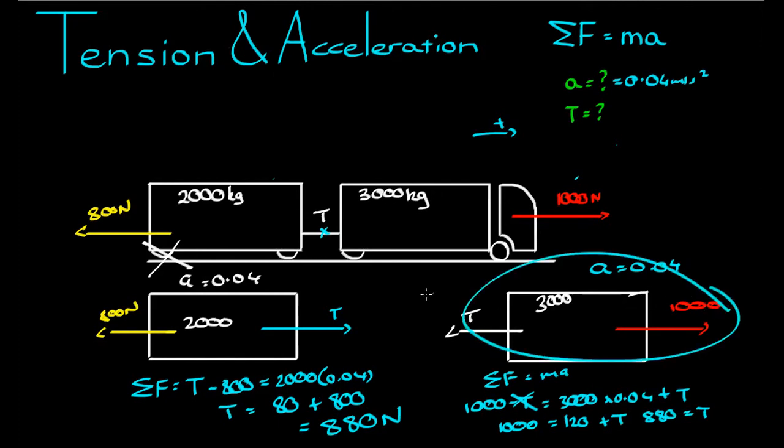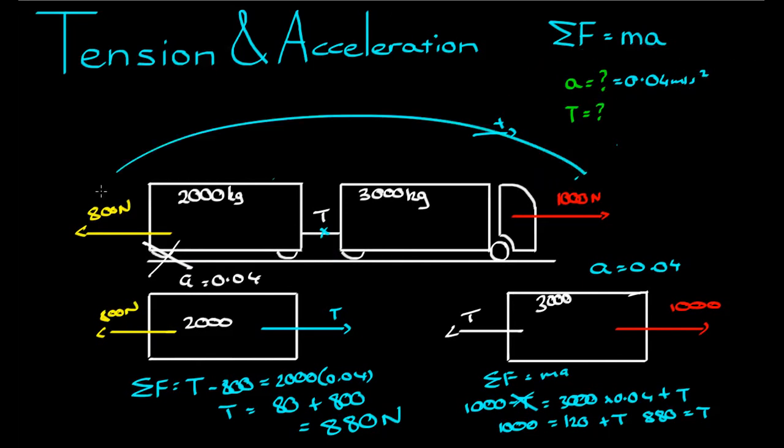So we can look at either this object or this object in isolation. The key to these questions is first figuring out what the acceleration is of the entire system, and then you know the acceleration of each individual object. You can start working out the forces between here.